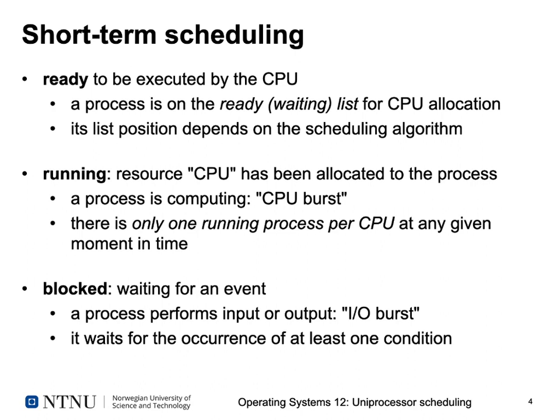In the running state, a process has been allocated to the CPU and has all resources it needs to continue executing — it is computing something, executing code, doing calculations. This is what we call the CPU burst: a continuous sequence of instruction execution. For a single processor system, there is only one single running process at any given moment; for a multiprocessor system, it would be one running process per CPU.